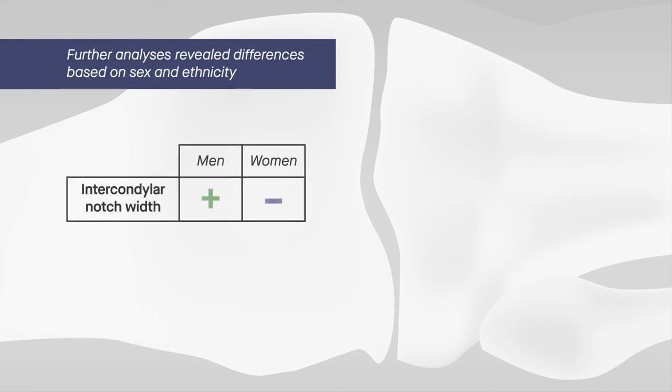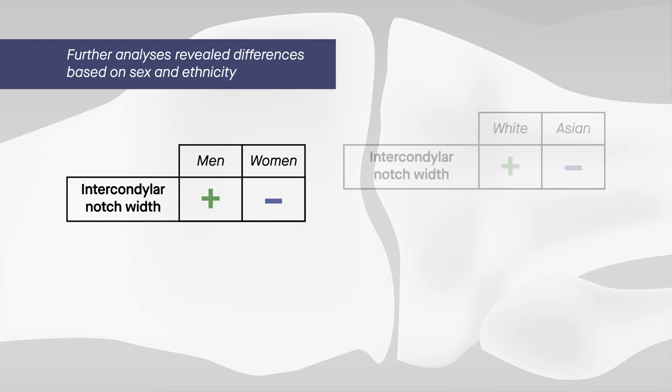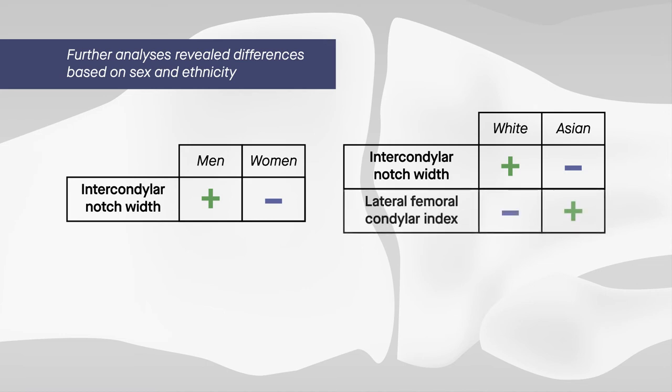Further analysis revealed differences based on sex and ethnicity. The intercondylar notch width was wider in men, and compared with white participants, Asian participants had a narrower intercondylar notch width, higher lateral femoral condylar index, and lower medial posterior plateau tibial angle.